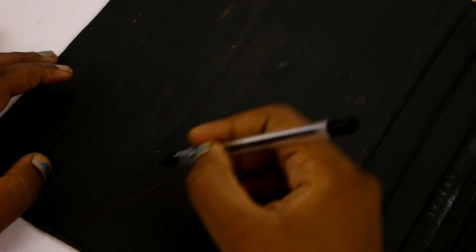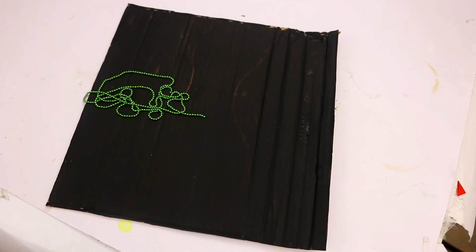We will add a contrast to the black color. Choose your favorite color. This is the aluminum foil. It will be painted first. Therefore, we will create a design and use this design.